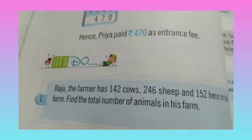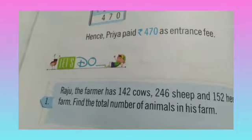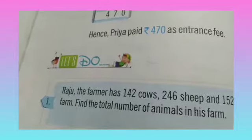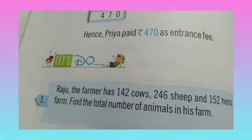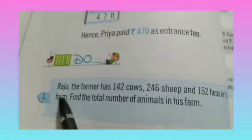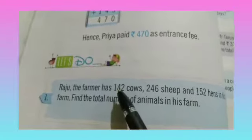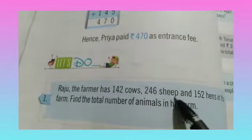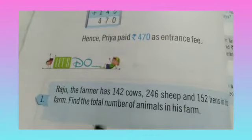Raju the farmer has 142 cows, 246 sheep and 152 hens in his farm. Find the total number of animals in his farm. He has 142 cows, 246 sheep and 152 hens. Now we have to tell the total number of animals in his farm.